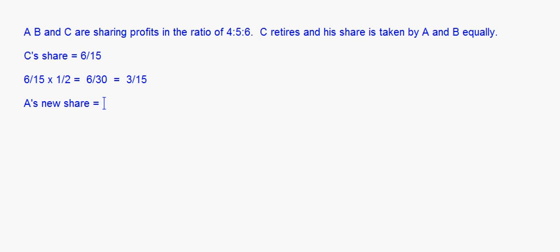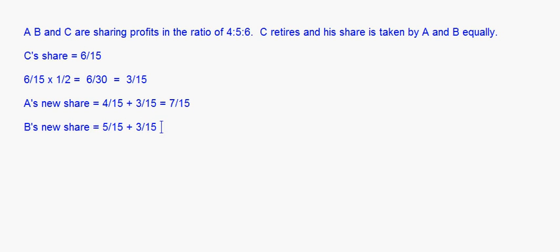A's new share equals the earlier share of 4/15 plus the gain of 3/15, which becomes 7/15. B's new share equals 5/15 plus 3/15, which becomes 8/15. So the new ratio is 7:8. The gaining ratio is 3/15 : 3/15, which equals 1:1.